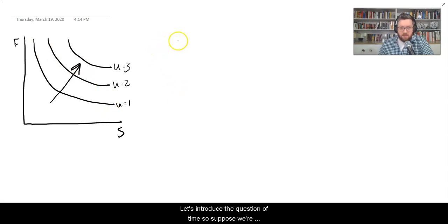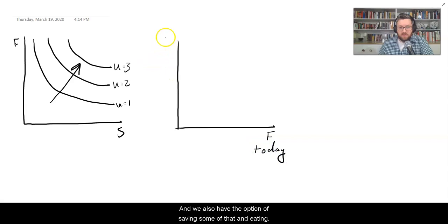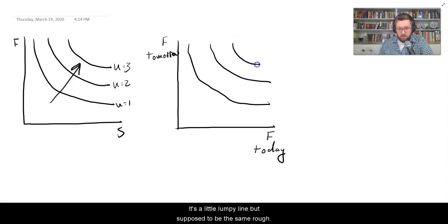Let's introduce the question of time. So suppose we're making a decision about how much food to have today. So I've drawn food instead of shelter down here. And we also have the option of saving some of that and eating it tomorrow. Well, we can think of these as just two more goods that we have preferences over. It's a little lumpy line, but it's supposed to be the same roughly. The idea here is we can just label this exactly the same, treat these just like any other good.